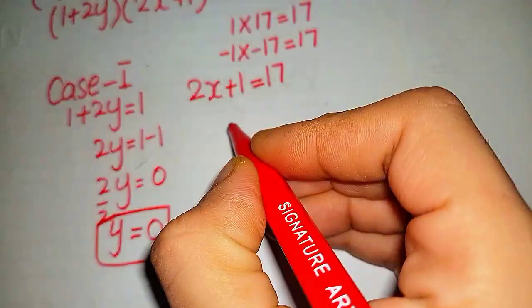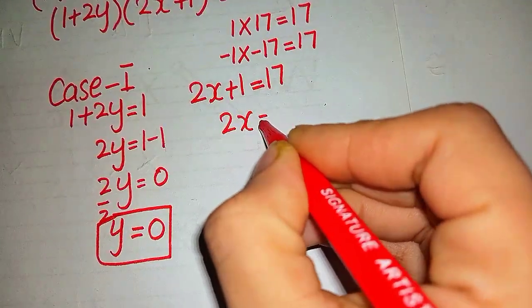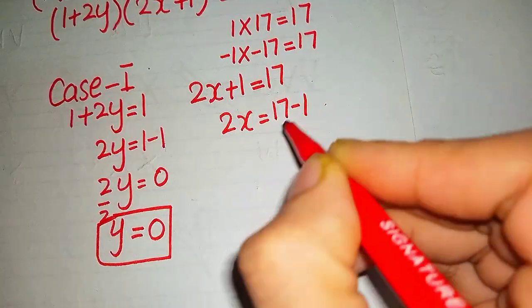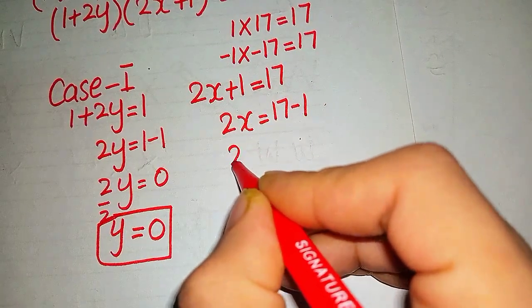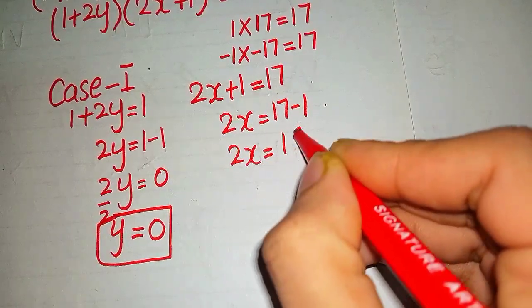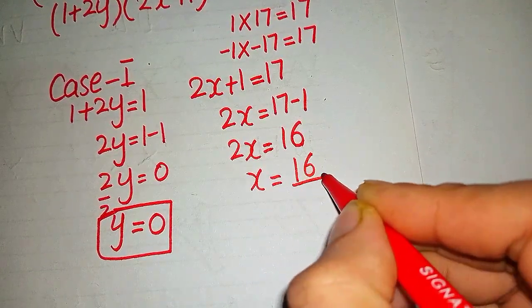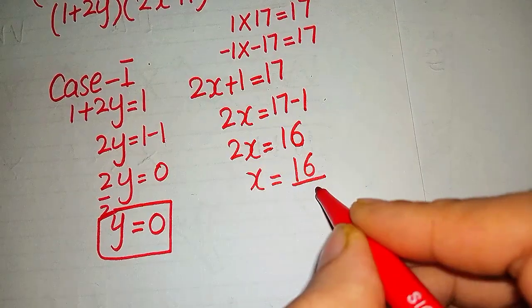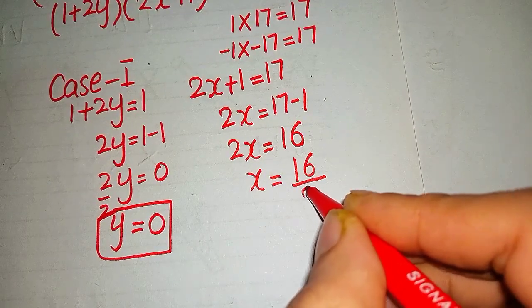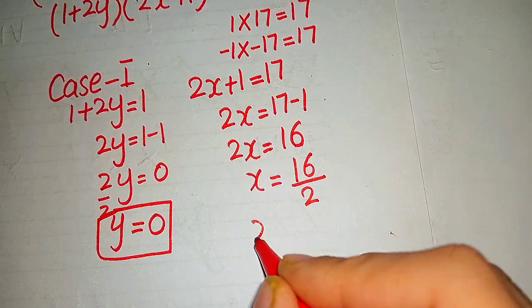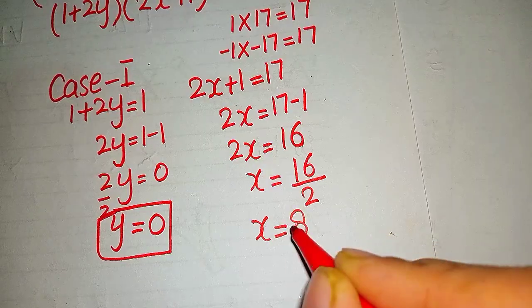Similarly here, 2x = 17 - 1, so 2x = 16. When we divide by 2, the value of x becomes x = 8.